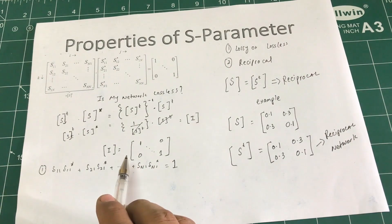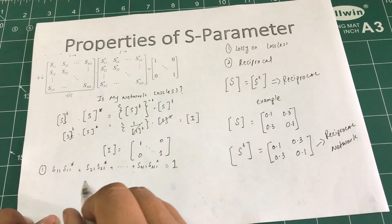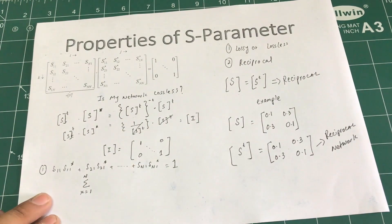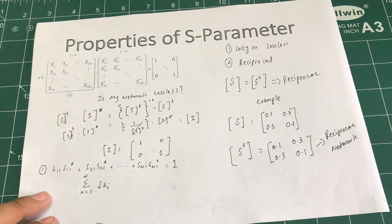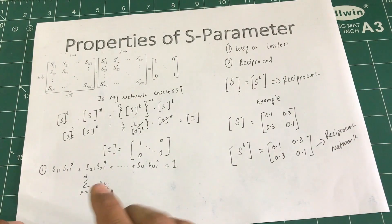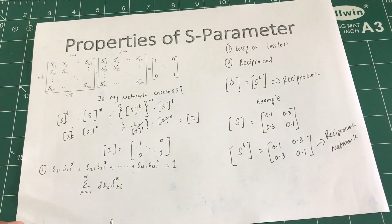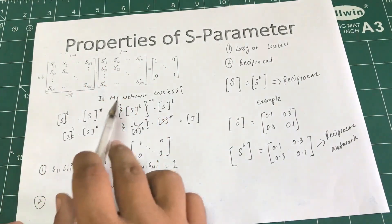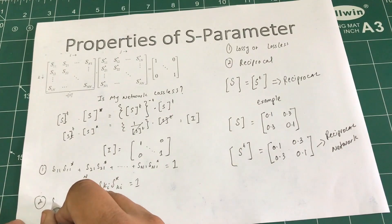I can write this in a generic form: the sum for k equals 1 to n of S_ki times the conjugate of S_ki equals 1. That's the diagonal condition. The second criteria is to take row 1 and multiply by column 2, and repeat this for all combinations.